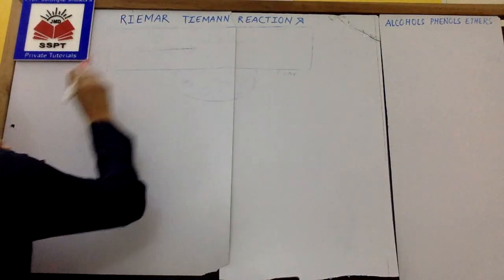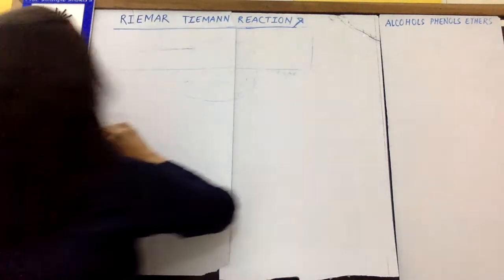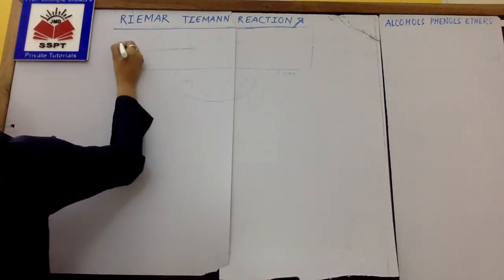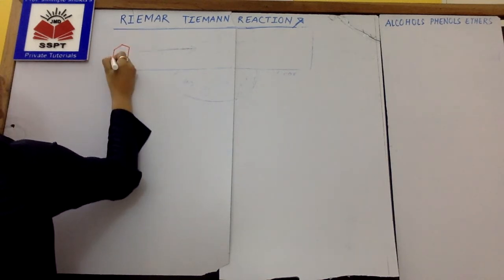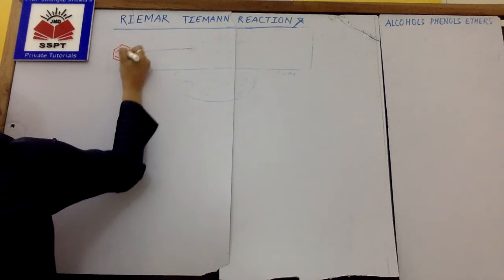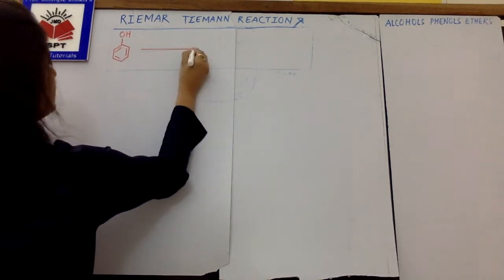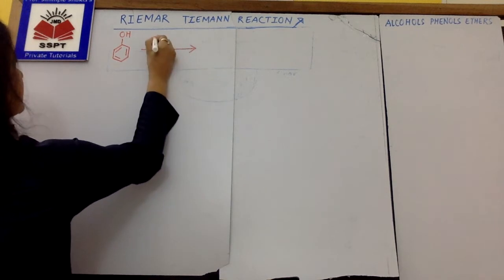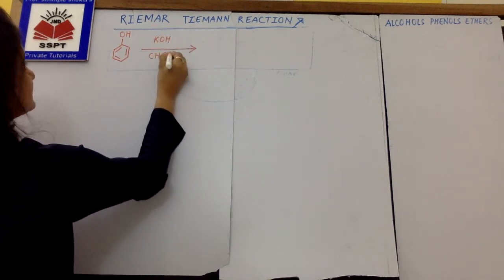So let's see what the Reimer-Tiemann Reaction is. The first thing we need to focus on is that you have to take phenol in this reaction. This is what you want, you want a molecule of phenol. This phenol we will add KOH and chloroform CHCl3.